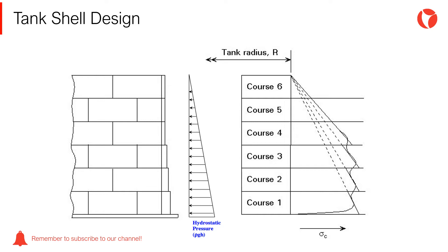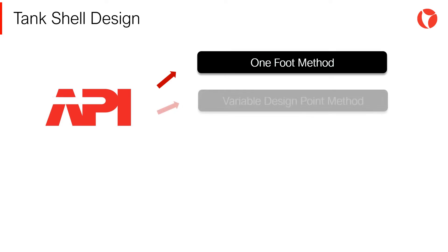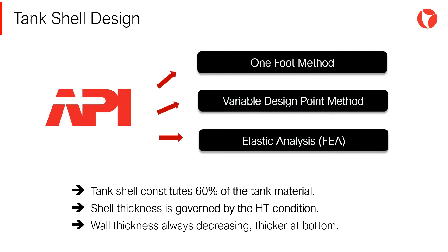In order to establish the tank shell thickness, the different calculation methods define the height at which the maximum stresses are located in every shell course — stresses that must be lower than the allowables. There are three methods to determine the tank shell thickness accepted by the storage tanks standard API 650: the 1-foot method, the variable design point method, and the elastic analysis — in other words, finite element analysis.